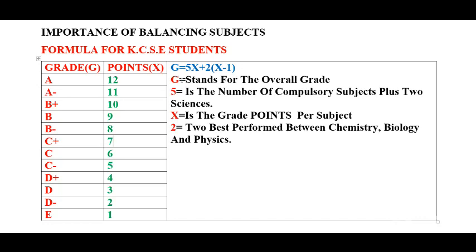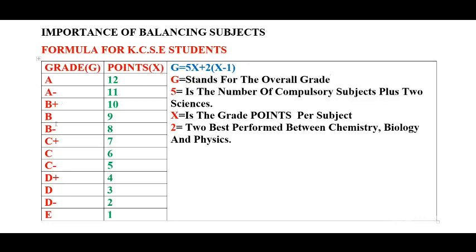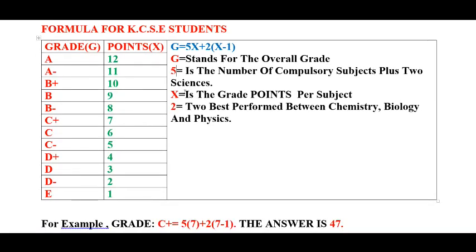Let me explain what G is. G is the overall grade — for example, if we want a C plus, that is the overall grade. So G stands for the overall grade. The five in the formula stands for the number of compulsory subjects plus two sciences. X is the grade points per subject — for example, if it is grade A it has 12 points, so X stands for these point values.